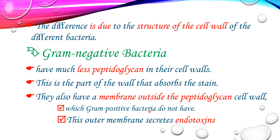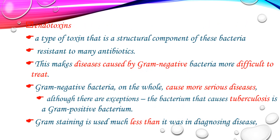This outer membrane in gram-negative bacteria secretes endotoxins. Endotoxins are a type of toxin that is a structural component of gram-negative bacteria. This endotoxin makes gram-negative bacteria resistant to many antibiotics.